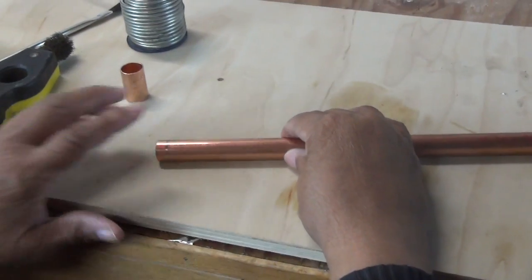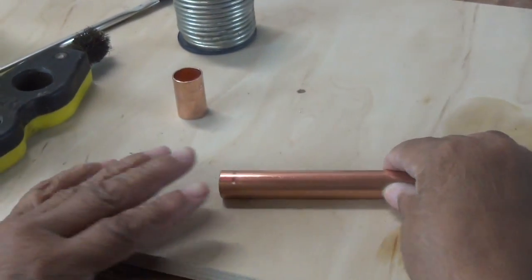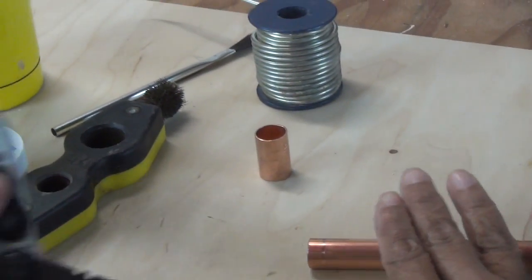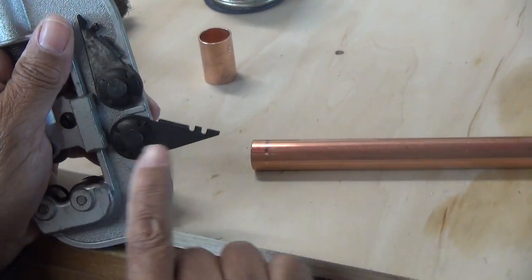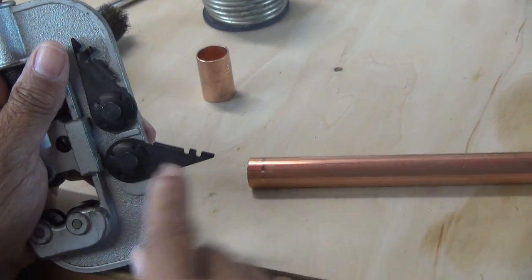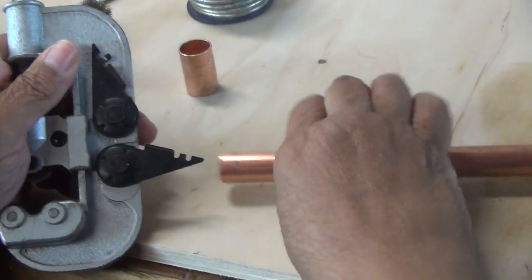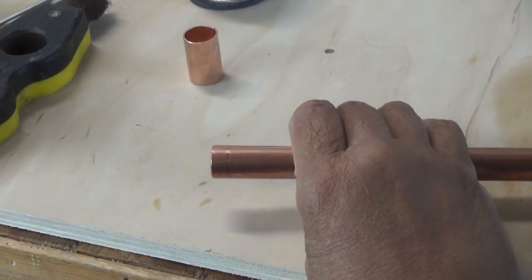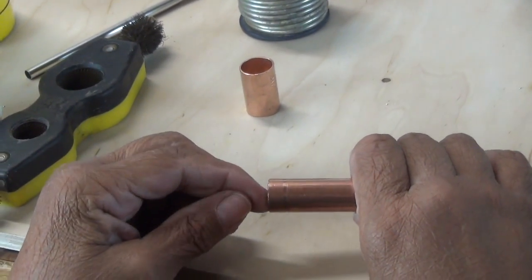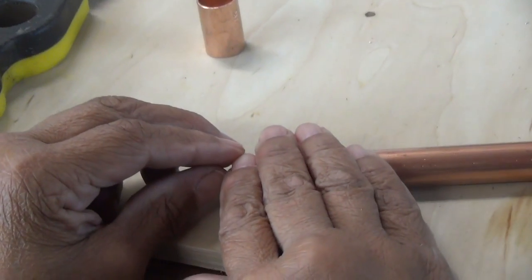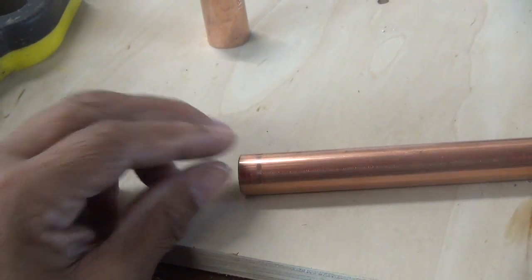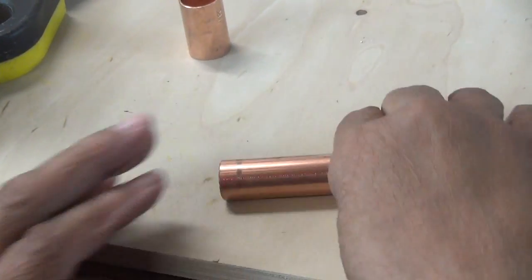So I've got my copper pipe here. I've already cut it and deburred it. In the event you don't know what deburring is, it's when you take a tubing cutter and this part of the tubing cutter is a reamer and that helps you to burr it out and get all the metal shavings out so that those metal shavings aren't traveling into your water supply. So that's all taken care of.